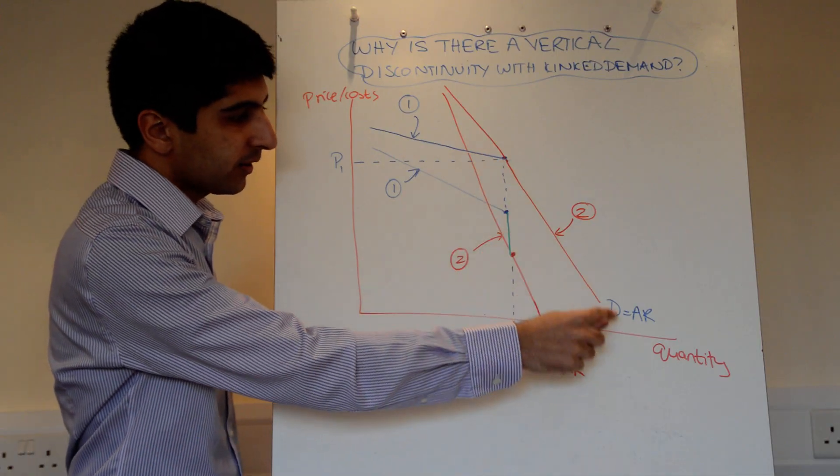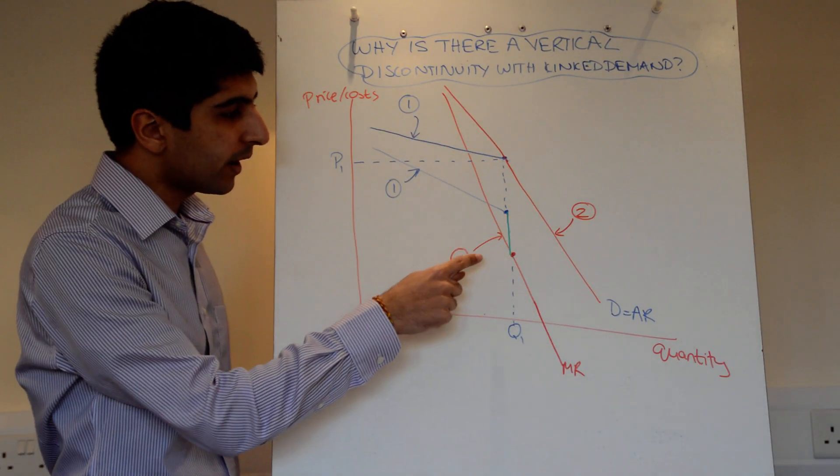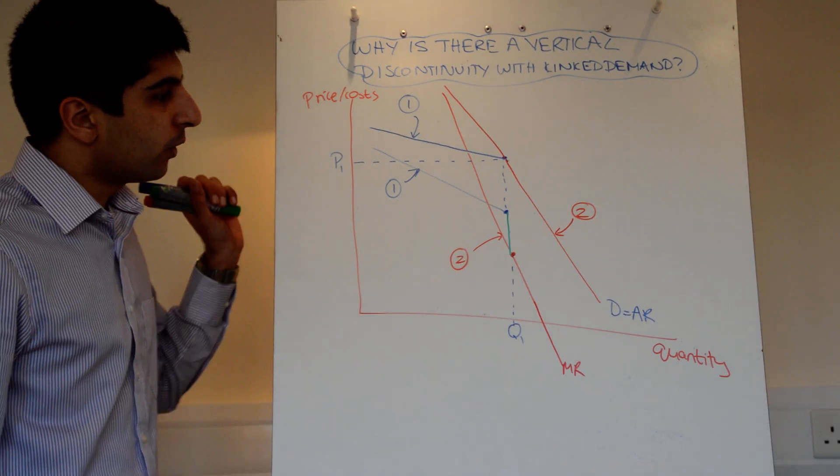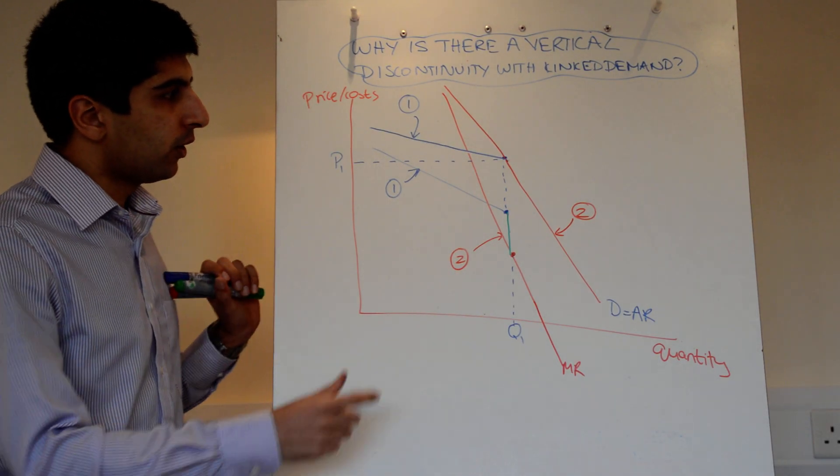And for the red part of the demand curve, I've drawn the corresponding marginal revenue curve, which is label number two there. Right, so what's actually going on?